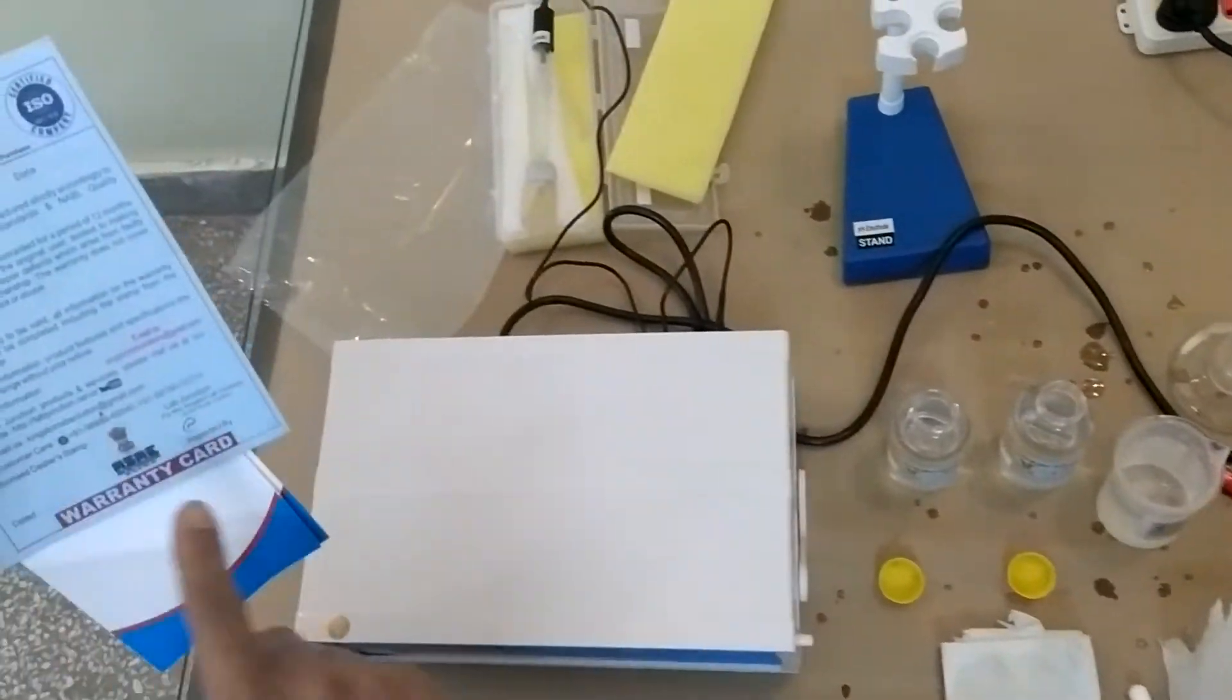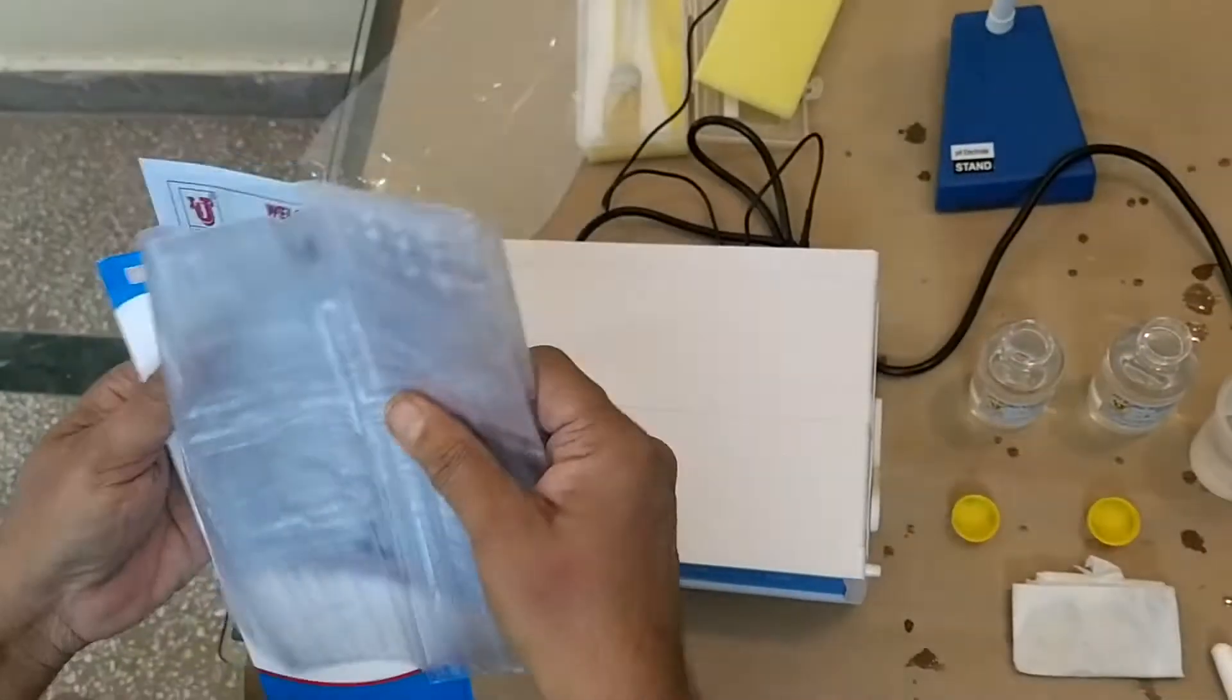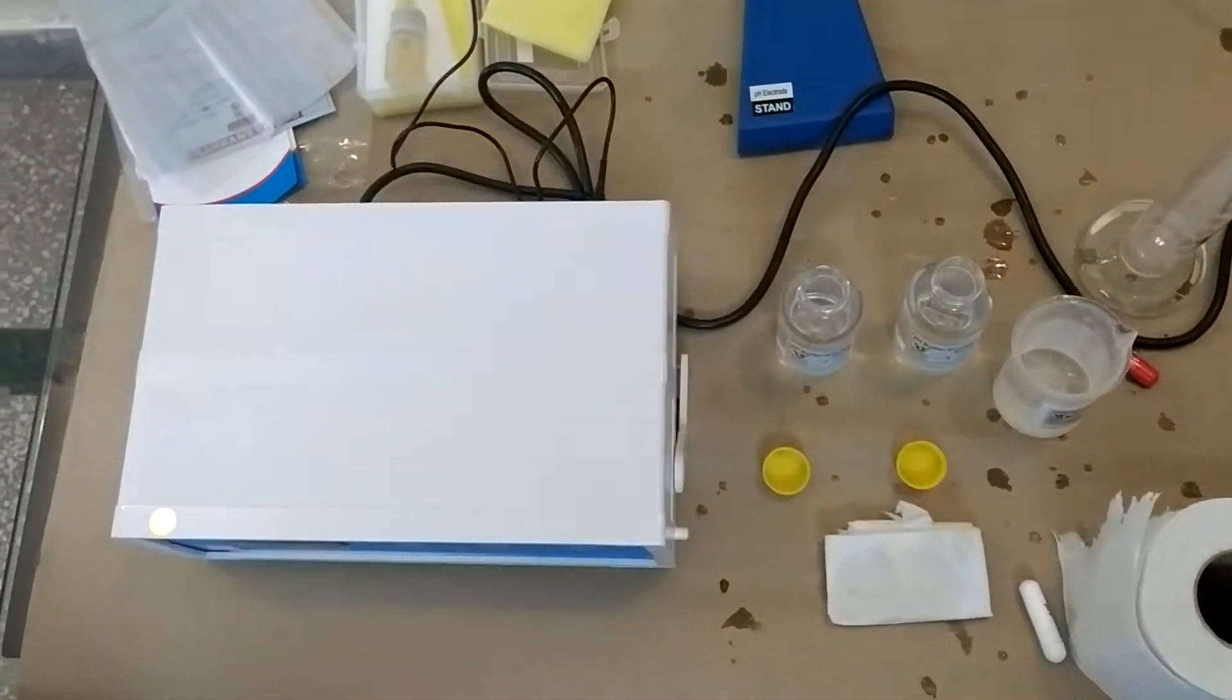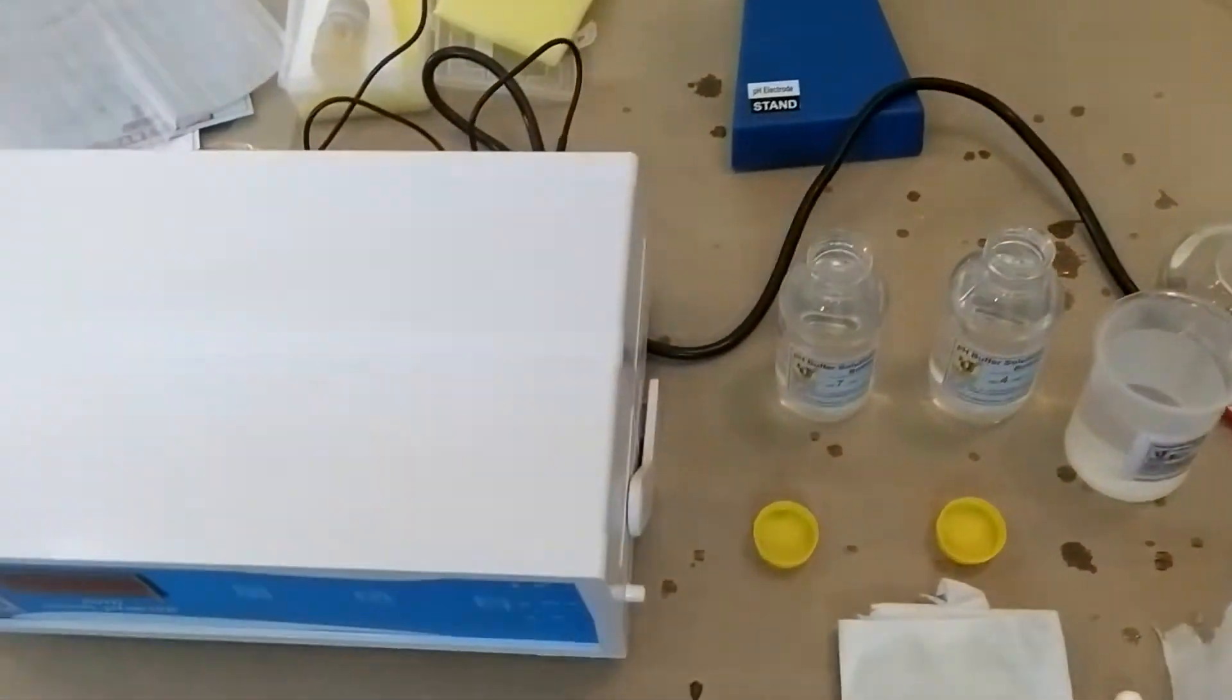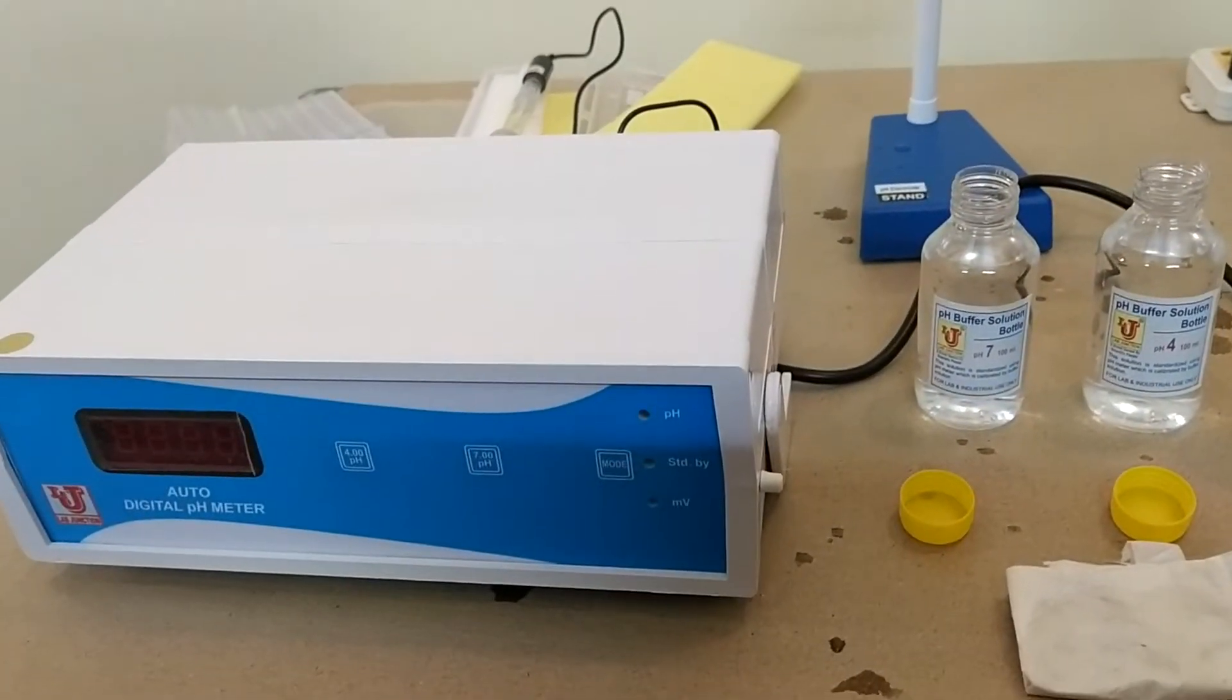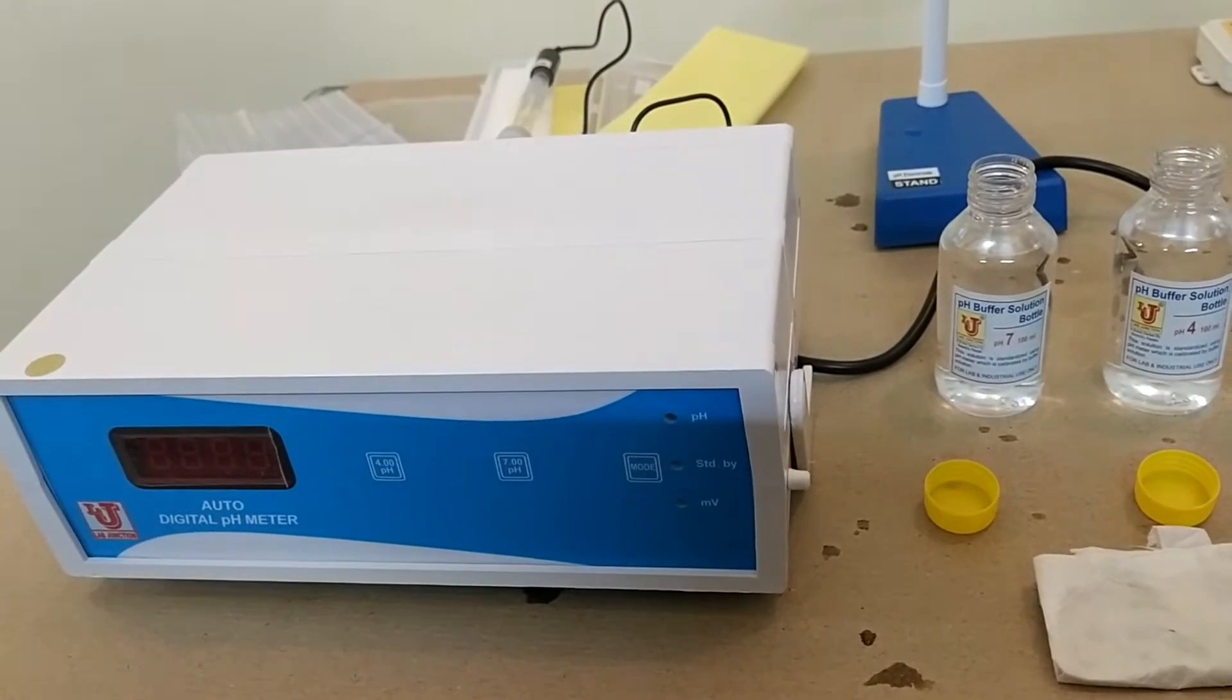This is the warranty card for 1 year. Now, how to calibrate Lab Junction Auto Digital pH meter.